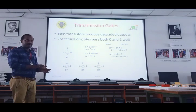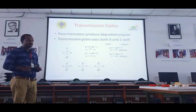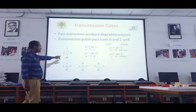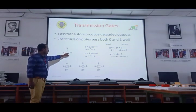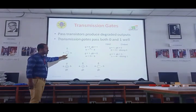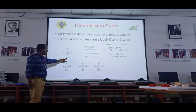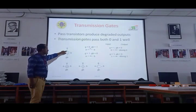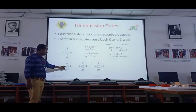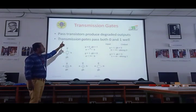Now, the transmission gate symbol: it is like a box, with a bubble on one side — bubble means PMOS — and the other side is NMOS. So the bubble side is G-bar and the other is G. Also available as a symbol with two diodes crossed. These are all the symbols of the transmission gate. We are using this transmission gate to generate or design the MUX.